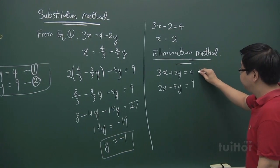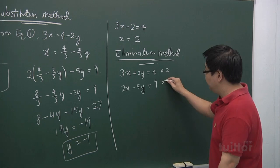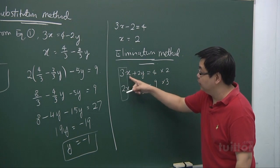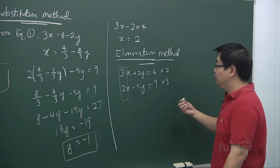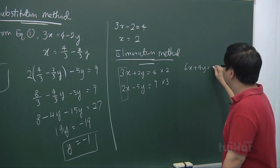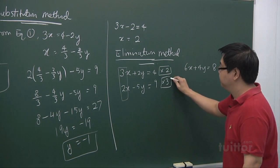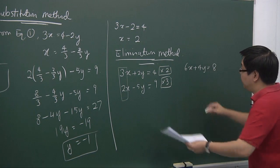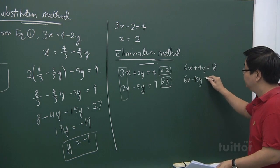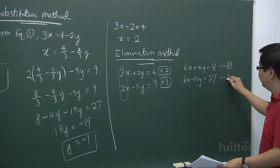If you multiply equation 1 by 2 and multiply equation 2 by 3, you will be able to make the coefficient of x the same. So what we get will be 6x plus 4y equals 8, and for the second equation, multiplying by 3 gives 6x minus 15y equals to 27. Let me call these the new equation 1 and 2.